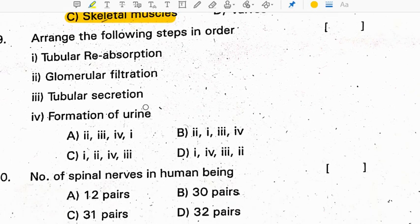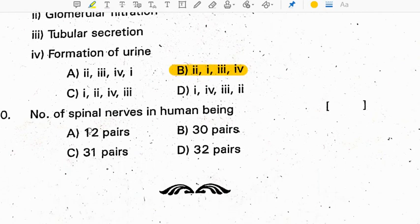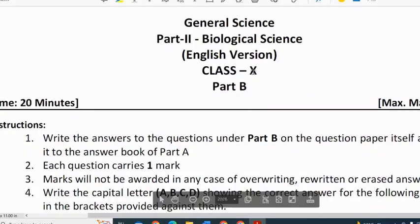Arrange the following steps in order — this is the correct order. Number of spinal nerves in human beings is 31 pairs, or 62 in number.